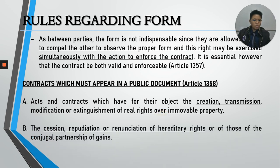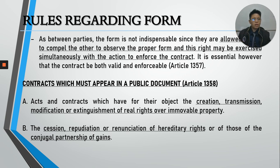Second: accession, repudiation, or renunciation of hereditary rights or those of the conjugal partnership of gains. For example, if three siblings are set to inherit from their deceased parents and one sibling — who is already wealthy — wants to repudiate or renounce his hereditary rights in favor of his siblings, that renunciation must be done in writing.